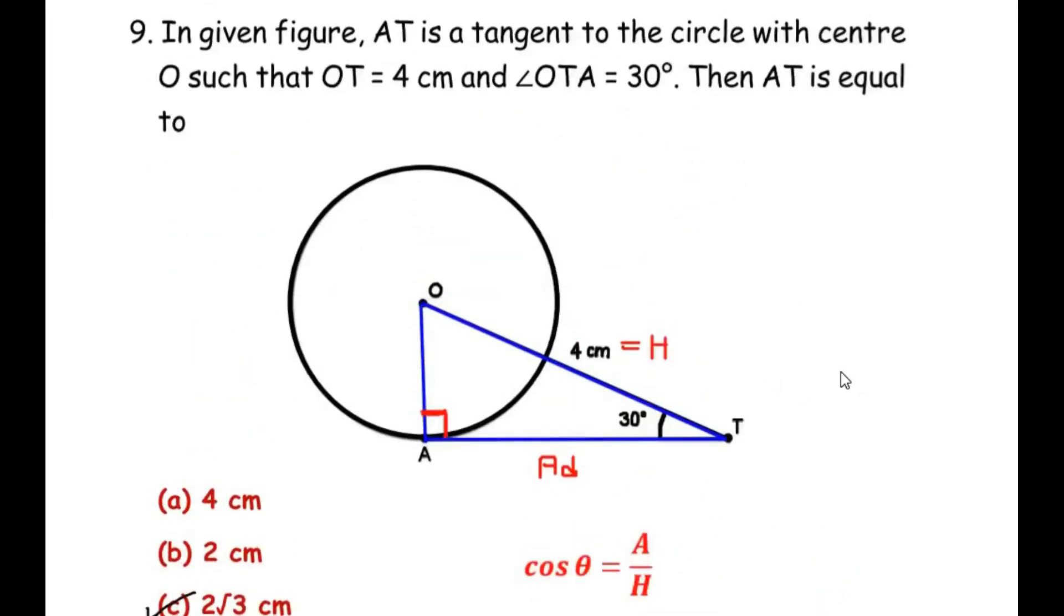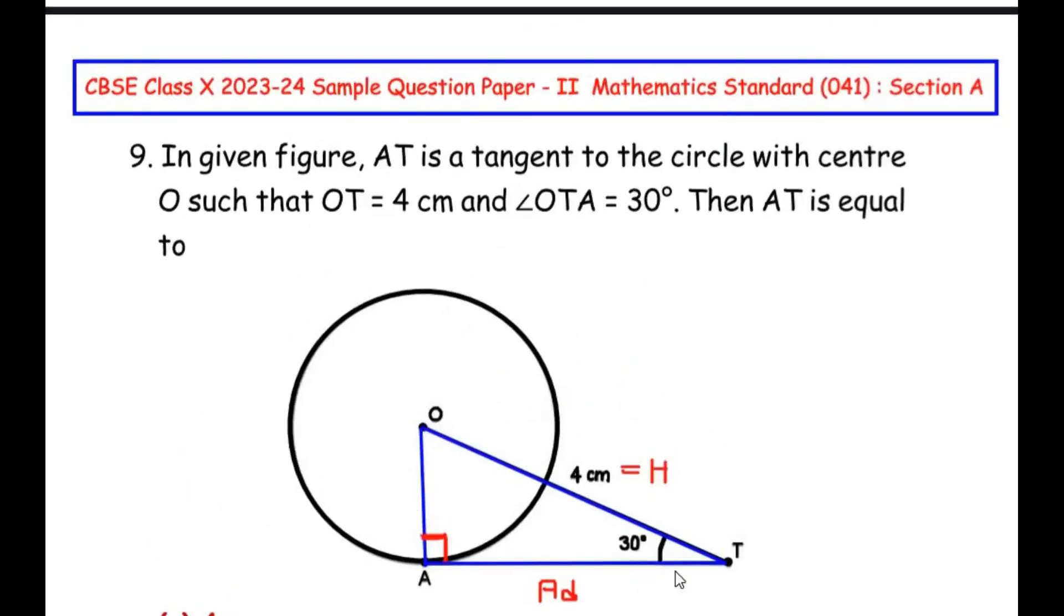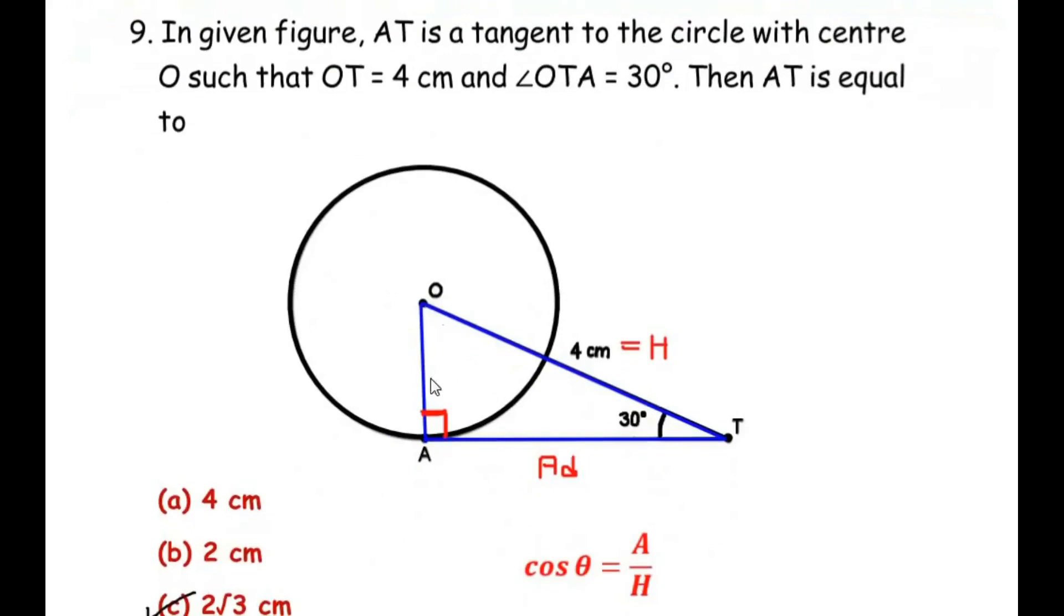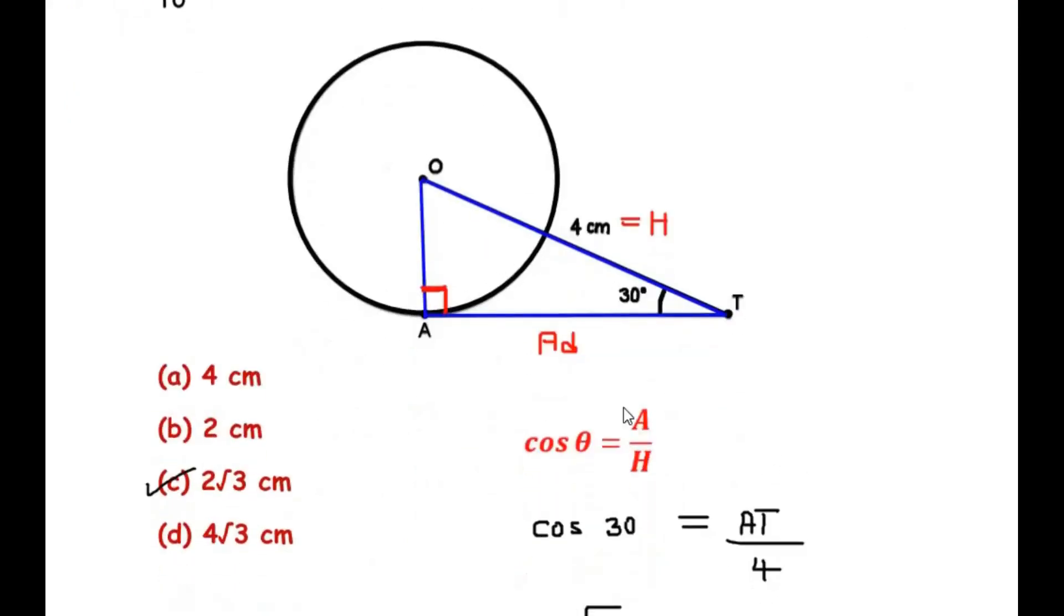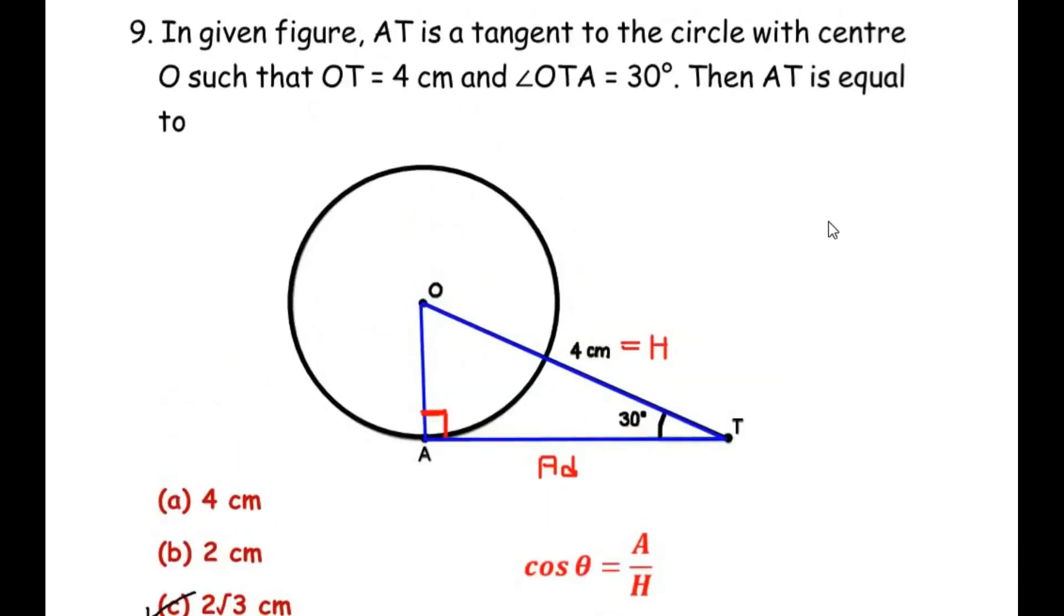So here to solve this example we have made use of the radius tangent theorem to make the right angle triangle, and once we have found the right angle triangle, we made use of the trigonometric ratio cos theta to find out the length of the side AT as it was asked in the question.